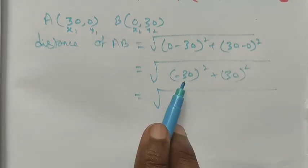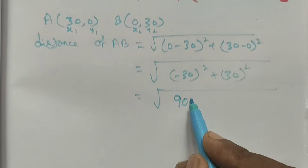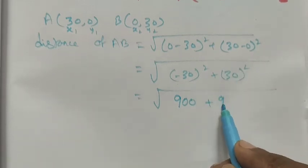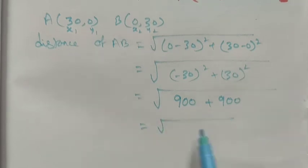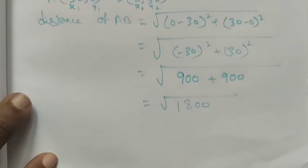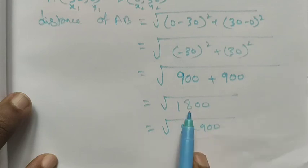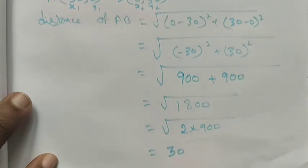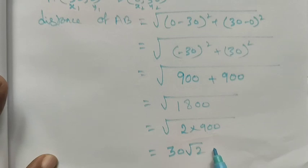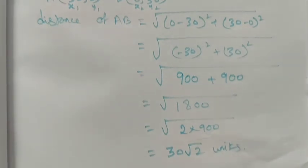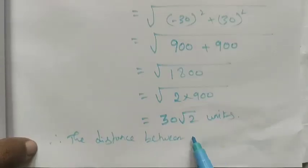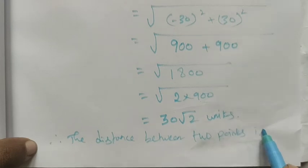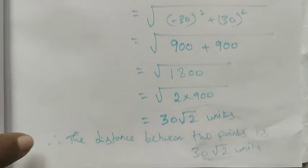Minus 30 times minus 30 is positive 900, and 30 times 30 is 900. So 900 plus 900 equals 1800, which equals the square root of 2 times 900. Since 900 is a perfect square with square root 30, the distance AB equals 30 root 2 units. Therefore the distance between the two points is 30√2 units. Thank you, students.